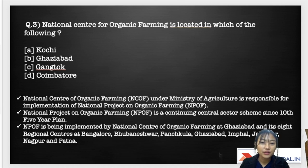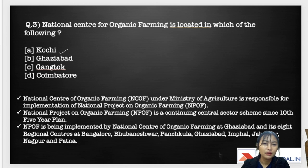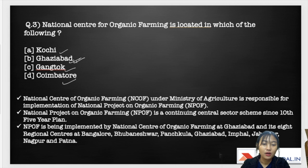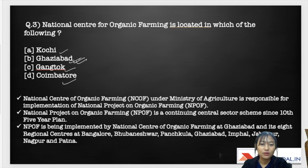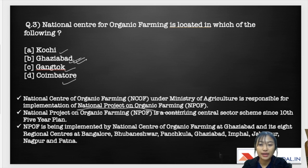Moving on to question three: the National Center for Organic Farming is located in which of the following? Options: A) Kochi, B) Ghaziabad, C) Gangtok, D) Coimbatore. The correct answer is B — Ghaziabad. The National Center for Organic Farming has its headquarters in Ghaziabad, under the Ministry of Agriculture, and is responsible for implementing the National Project on Organic Farming (NPOF).